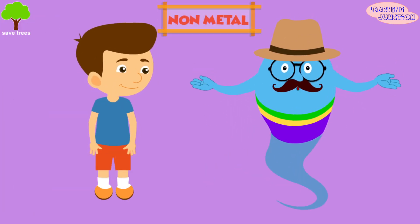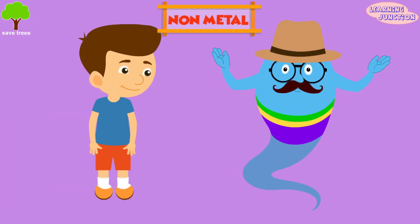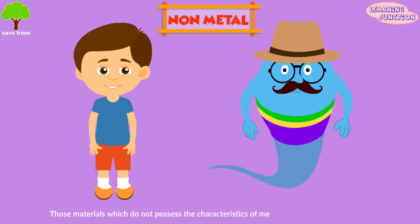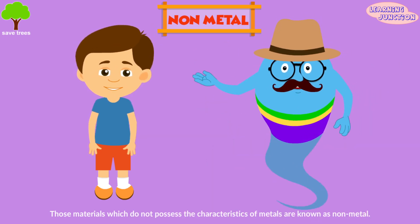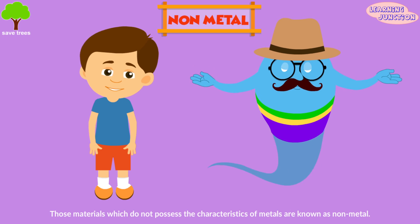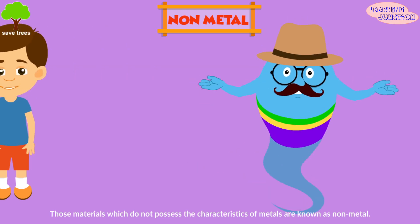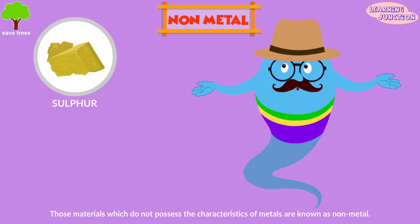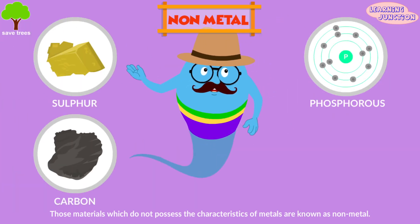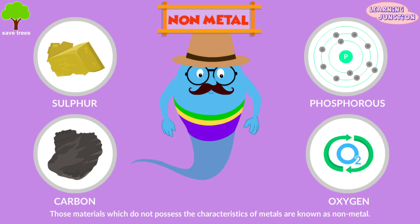Now the non-metals. Those materials which do not possess the characteristics of metals are known as non-metals. Few examples are sulfur, carbon, phosphorus, and oxygen.